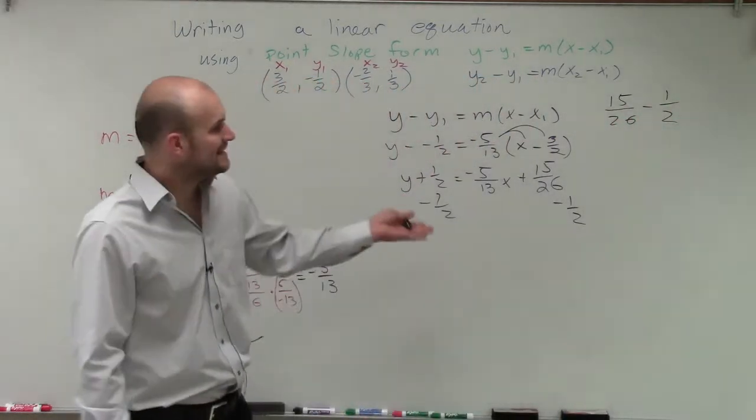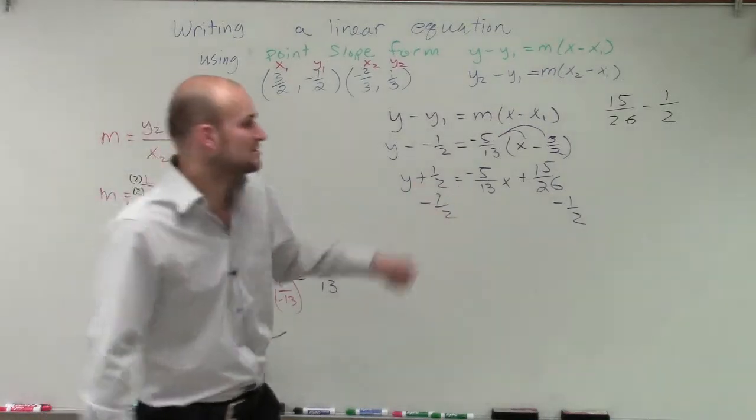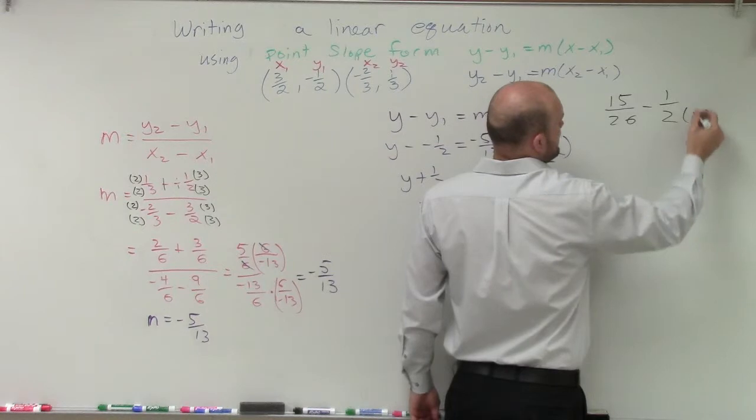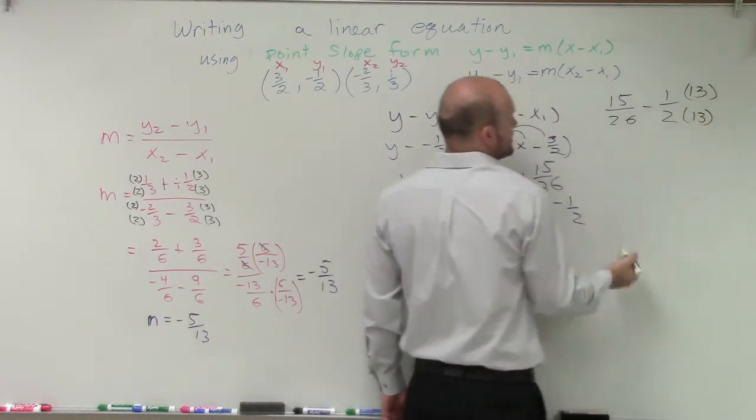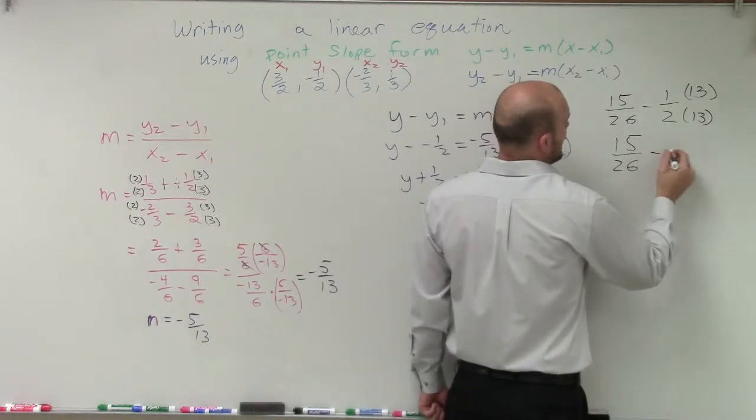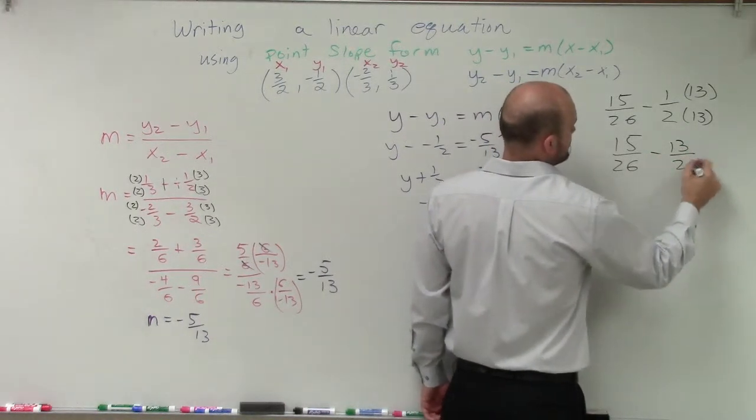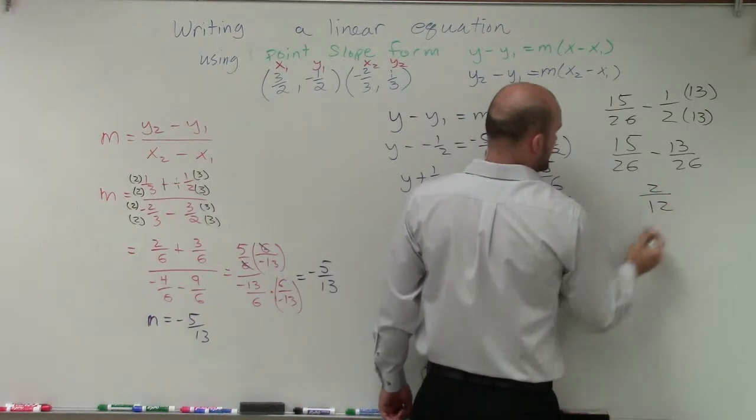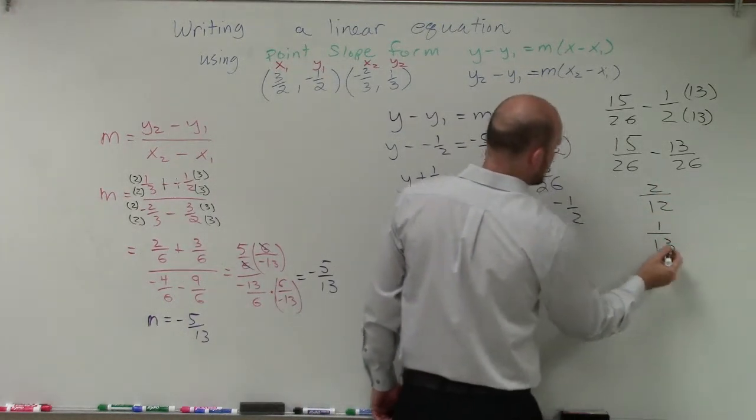Well again, remember, we need to make sure we have common denominators. So I just say, what do I need to get to 2 to be the 26? Well, that means I can multiply by 13. Whatever I do in the bottom, I have to do in the top. So therefore I have 15 over 26 minus 13 over 26. Well, that's going to become 2 over 26, which is equal to 1 over 13.